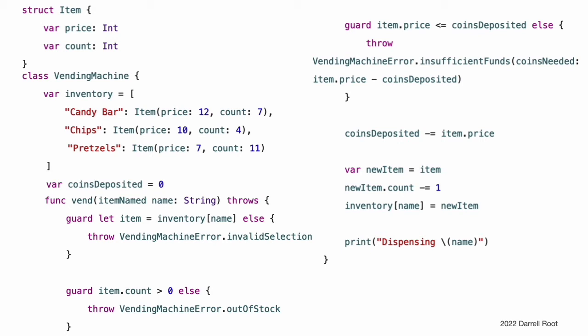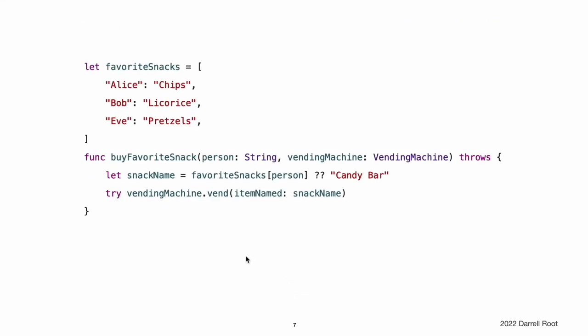Because a throw statement immediately transfers program control, an item will be vended only if all of the requirements are met. Because the vend(itemNamed:) method propagates any errors it throws, any code that calls this method must either handle the errors using a do-catch statement, try?, or try!, or continue to propagate them. For example, the buyFavoriteSnack(person:vendingMachine:) function is also a throwing function, and any errors that the vend(itemNamed:) method throws will propagate up to the point where that function is called.